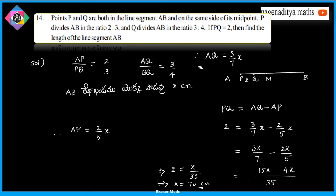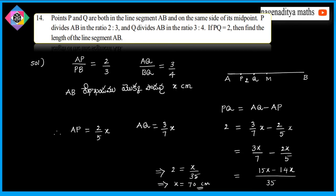AQ by BQ = 3:4, so AQ = 3x/7. Then PQ = AQ − AP = 3x/7 − 2x/5 = x/35. Since PQ = 2 cm, x = 70 cm. So the problem is easy.